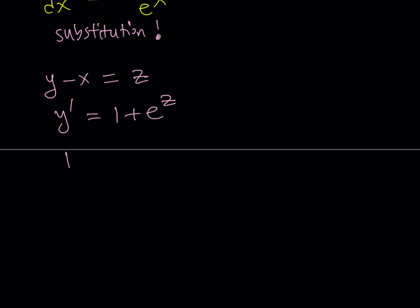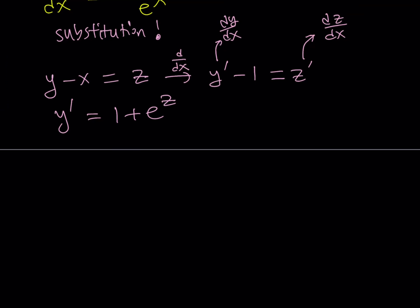Let's write y prime as dy over dx. But before that, I would like to do the following: since I have z on the right-hand side, I don't want y on the left-hand side — I want z. So what is the relationship? I have y prime, and I need to turn it into z prime. Let's differentiate both sides. Remember that y and z are functions of x, and we are differentiating with respect to x. The derivative of y with respect to x is dy over dx, or y prime. The derivative of x with respect to x is just 1. And the derivative of z with respect to x is dz over dx, or z prime.